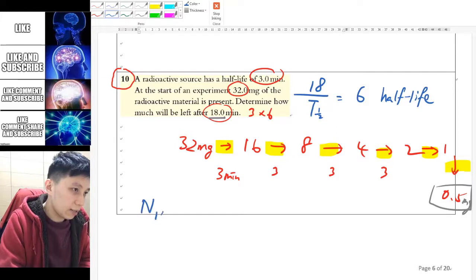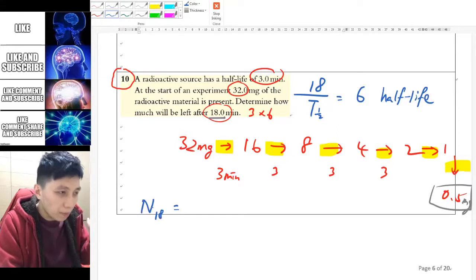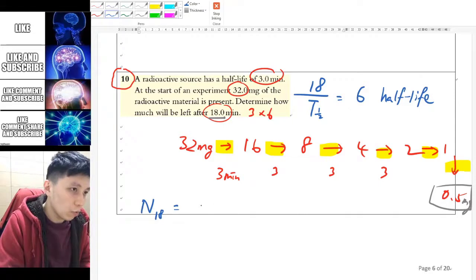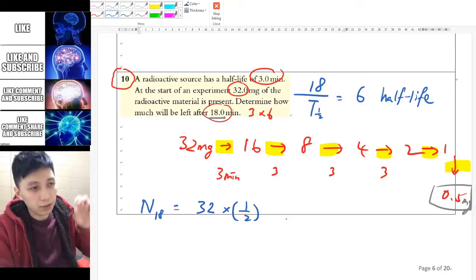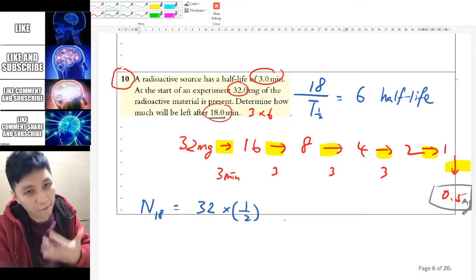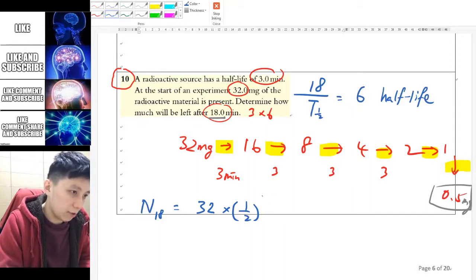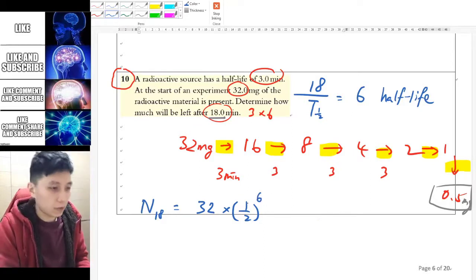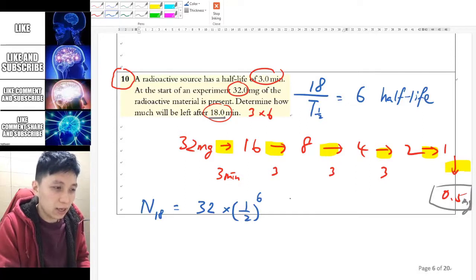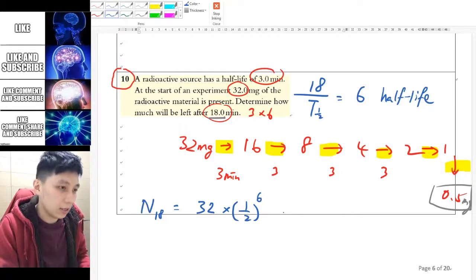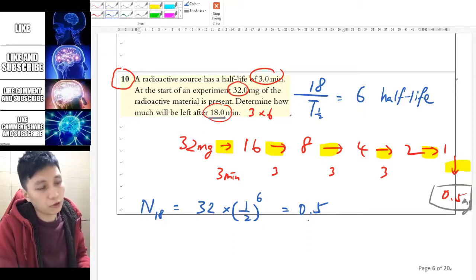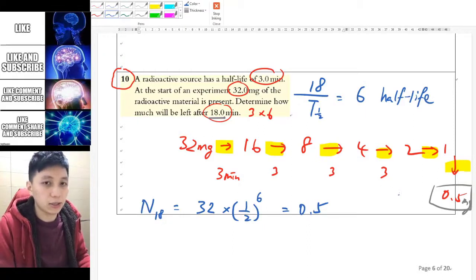And so in this case, we can express the n18, that means the number that is remaining after 18 minutes will be the original one, 32 times 1 over 2, or you can write divide 2. This is what happened to the number after one half-life pass. And so you have 6 and therefore you can do to the power of 6. So you can try to take advantage of this and then it can help you to present the idea much more easily. And so eventually, of course, the answer will still be 0.5. You could also double check the answer easily by using calculator as well.